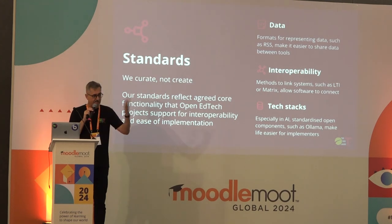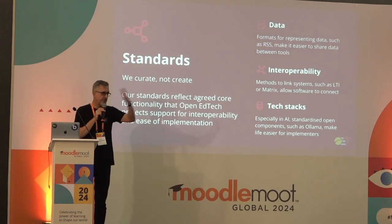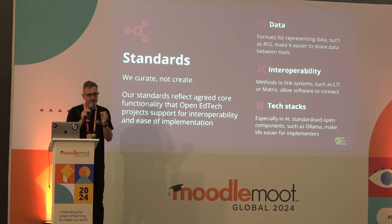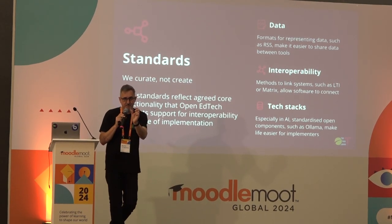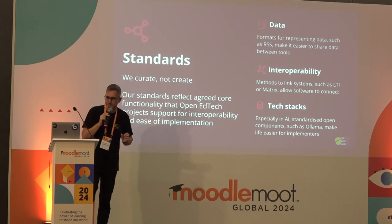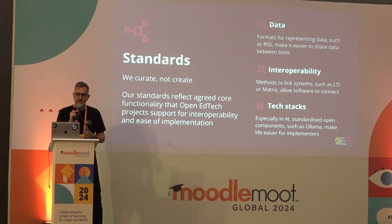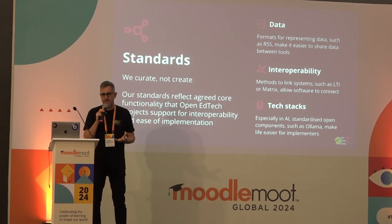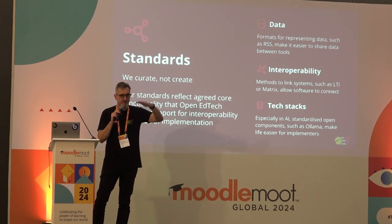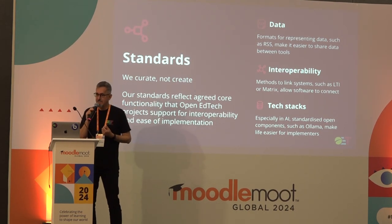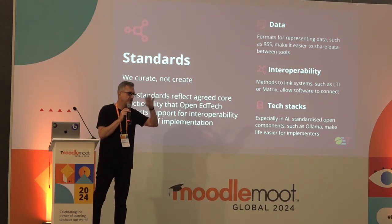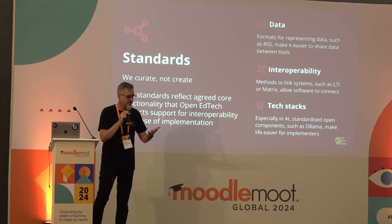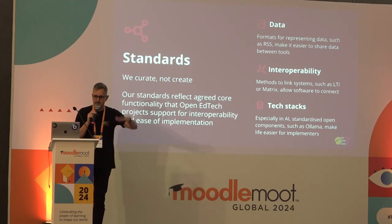The standards we are looking at are: data — how you're sharing data between systems; interoperability — how you link systems, like logging in on one system and being automatically logged in on all the others; and very importantly now, tech stacks, because a lot of functionality is built on other pieces of software, particularly in AI. There are many competing tools. If we all use the same tools, we have the same language and we're going to move faster than if we're all using different tools across the whole development stack.